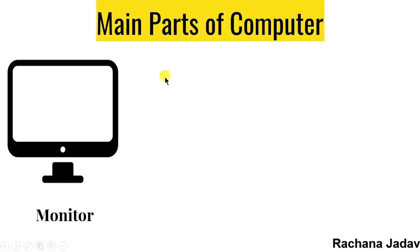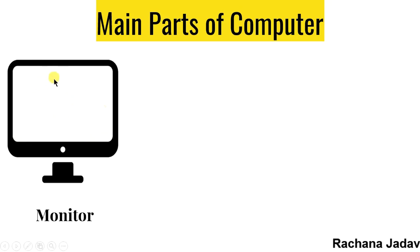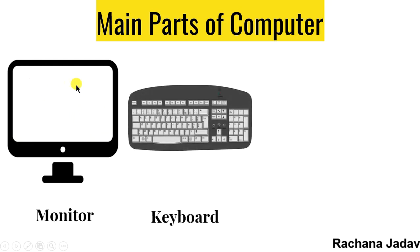Now the main parts of computer. As I have told you, we all have parts — humari bhi body parts hai, vaisa hi computer ke bhi parts hotte hai. So first of all, monitor. You can see videos on it, you can play games — aap ko screen pe dikhta hai, jaisa mobile me aap ko screen pe dikhta hai. You see the pictures and all that.